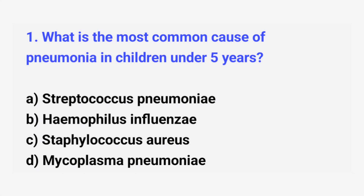Question number 1. What is the most common cause of pneumonia in children under 5 years? The right answer is option A: Streptococcus pneumoniae.